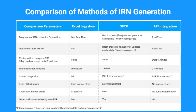So choose the right method that will suit your business needs. Now let's compare all three methods of generating IRN so that you can make an informed decision. Regarding frequency of IRN or e-invoice generation: under Excel ingestion, it is not real-time; under SFTP, it is a batch process; under API integration, it is real-time. Updating IRN and pulling it back into the ERP system is not available in the case of Excel ingestion, whereas for SFTP it is done through batch process, and under API it is done on a real-time basis.